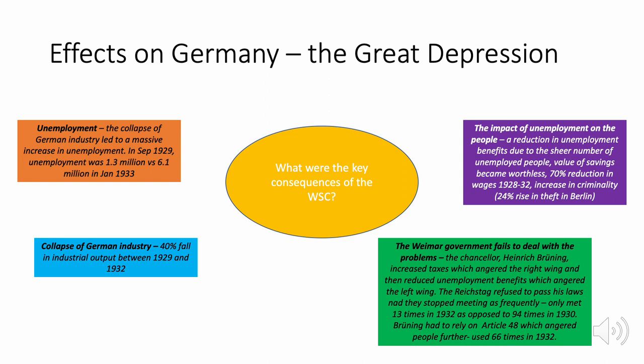The Weimar government failed to deal with the problem. The new chancellor, Heinrich Brüning, increased taxes — alienating the right wing — and reduced unemployment benefits — angering the left wing. He basically alienated both sides, so the Reichstag refused to pass his laws and stopped meeting as frequently, meeting only 13 times in 1932 despite being in the middle of a crisis. Brüning increasingly relied on Article 48, allowing the chancellor to pass laws without going through the Reichstag.